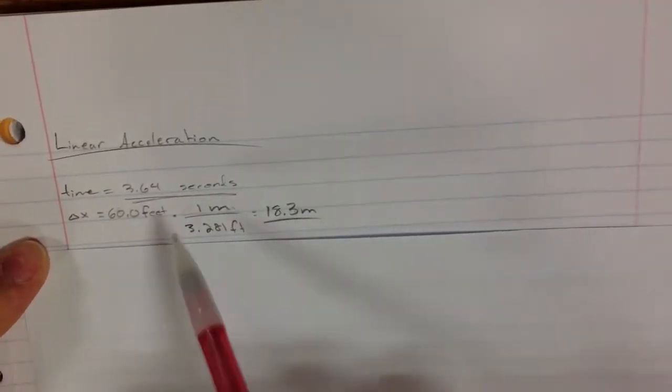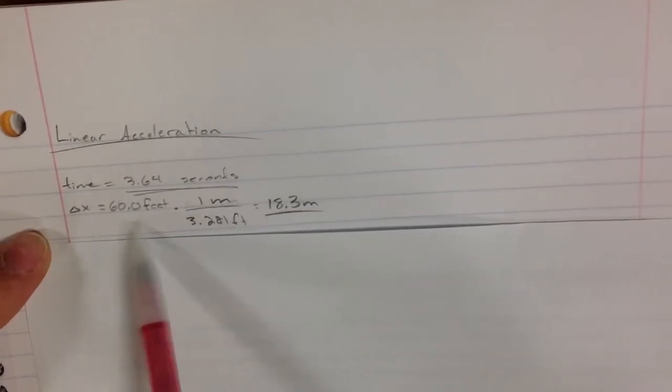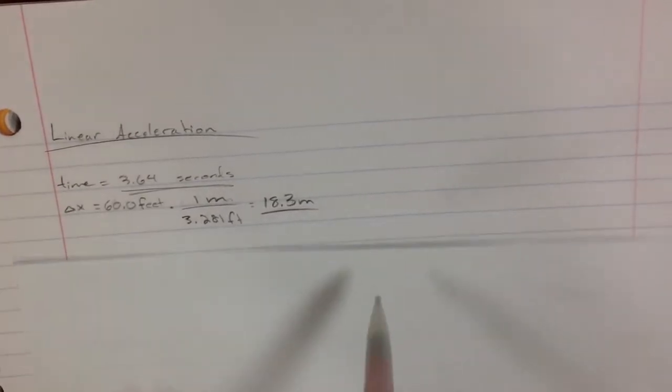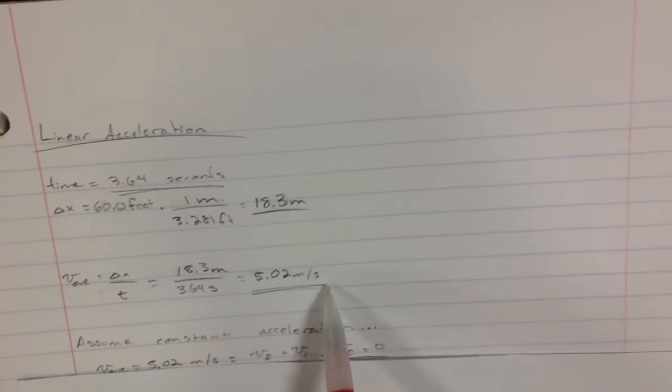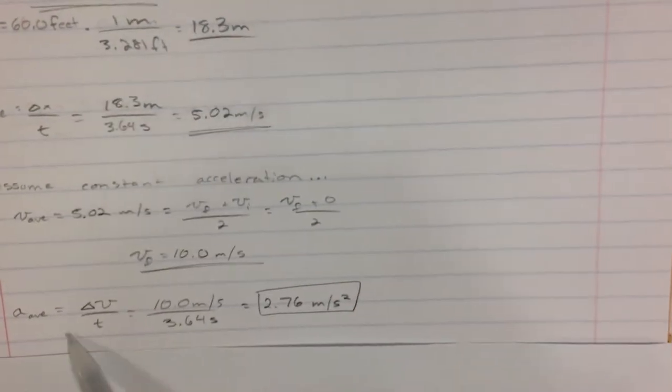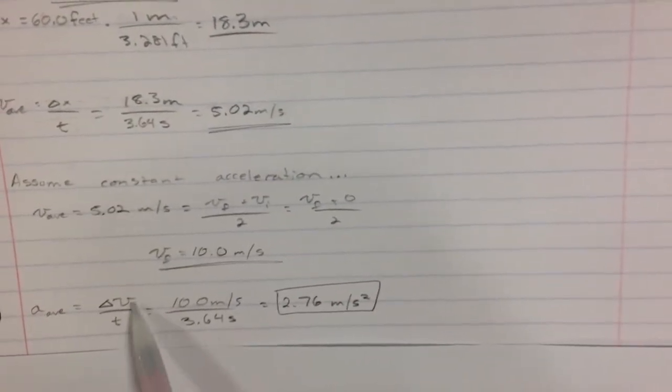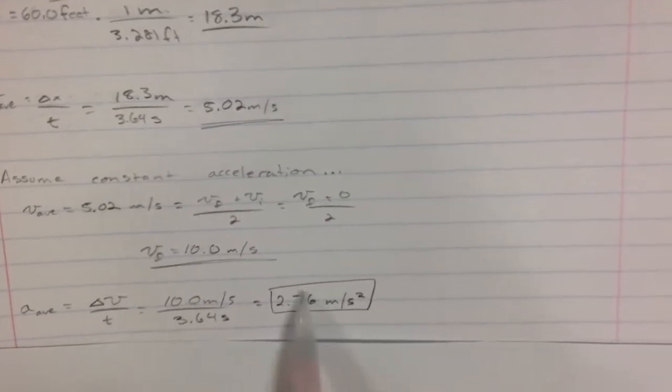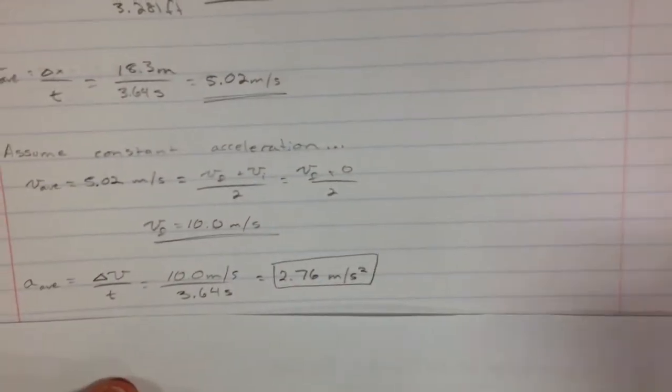Okay, we're rolling. Linear acceleration. So we took two measurements: time and change in position. We had 60 feet, the mats were 30 feet long and there were two of them. We converted feet to meters. And so using, assuming constant acceleration, first we found the average velocity was 5.02 meters per second. So then we assumed constant acceleration, and we can get the final velocity because the initial velocity was zero. So final velocity is 10 meters per second. And then average acceleration is changing velocity over time. So we do math, and then 2.76 meters per second squared is our average velocity for Nathan.